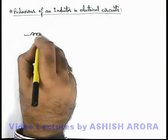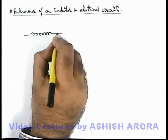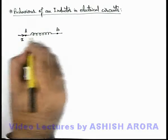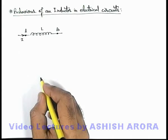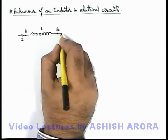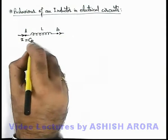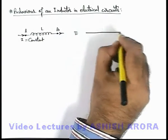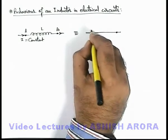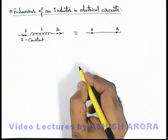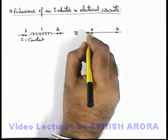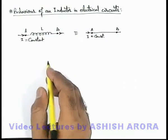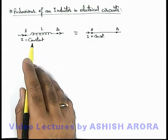Say we are given an inductor connected in an electrical circuit across terminals A and B, and a current i is flowing through the inductor having self-induction coefficient L. If the current is constant, the inductor will behave just like a straight wire across terminals A and B, because it acts only when the current changes through it.